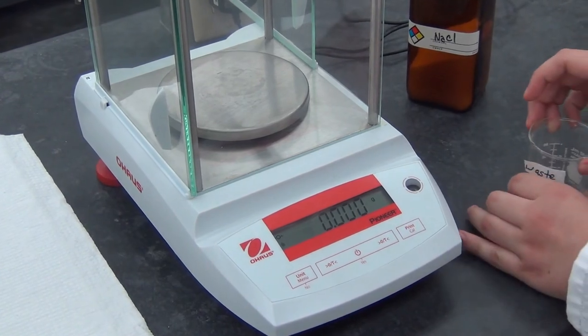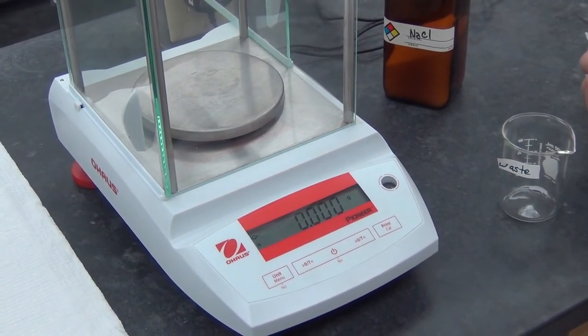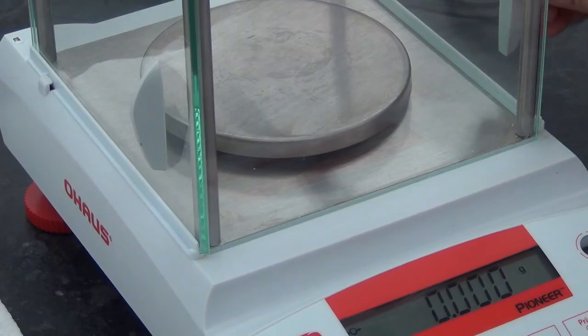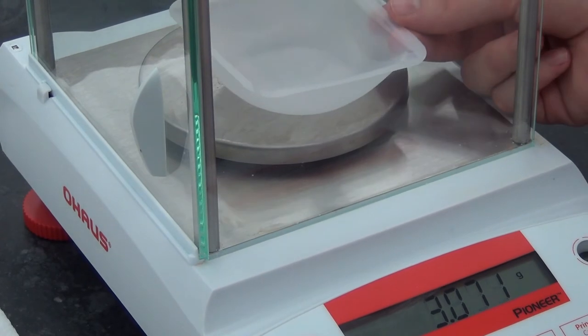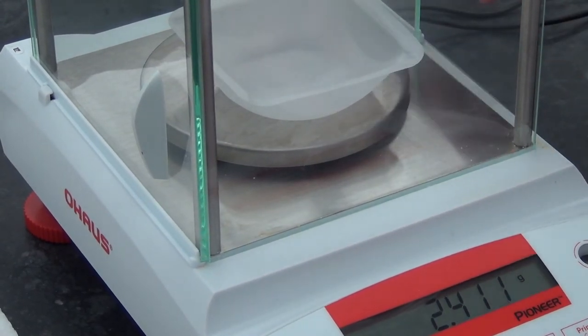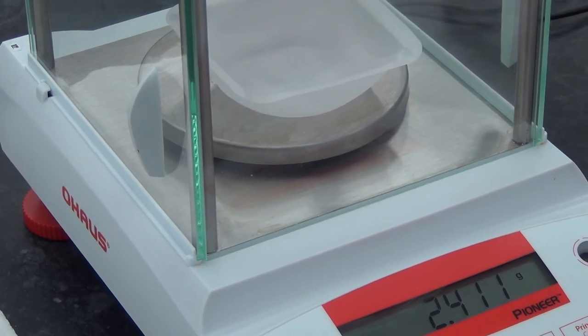Keep the balances clean. Do not weigh chemicals directly on the balance pan. Use a weigh boat, beaker, or weighing paper. Immediately clean up any chemicals which are spilled on the balance. Do not leave stray pieces of paper or glassware around the balances.